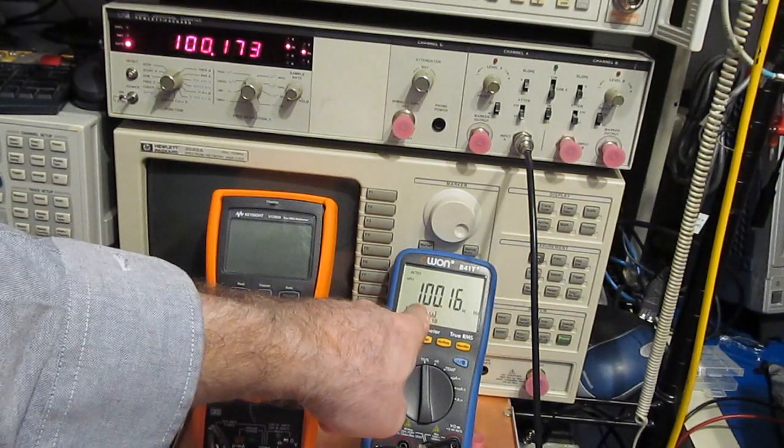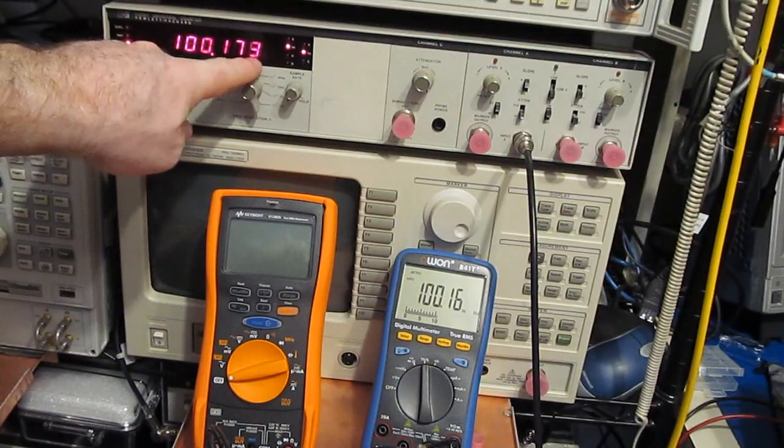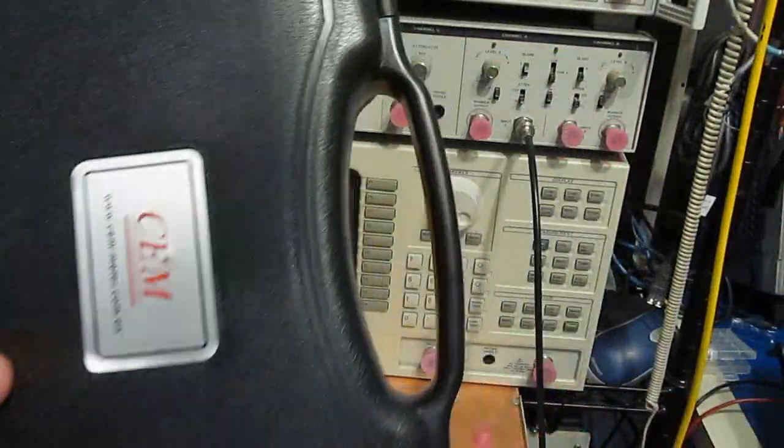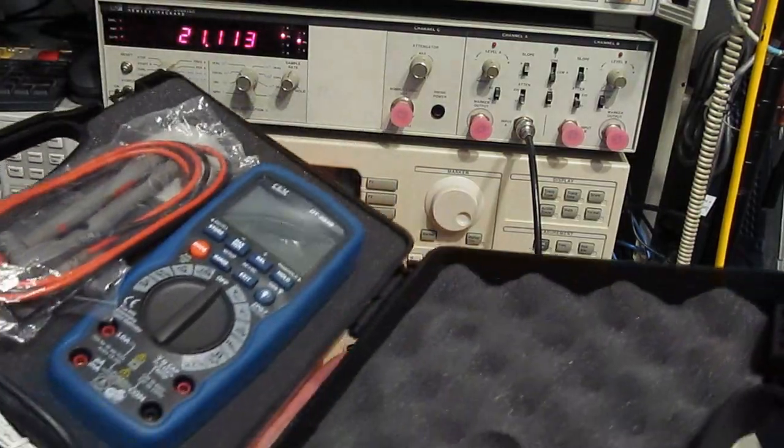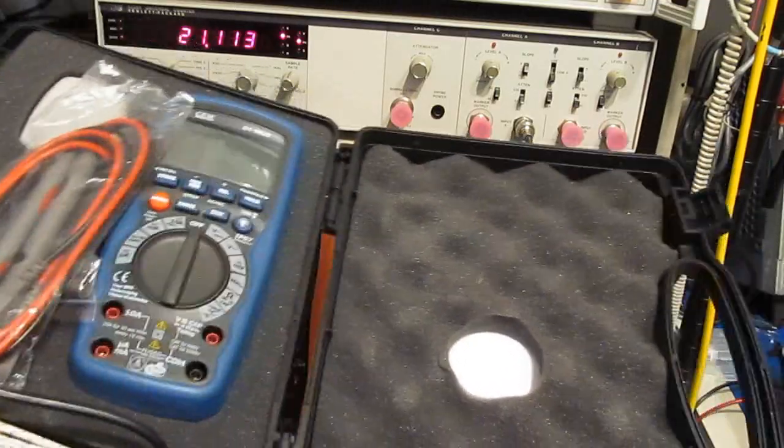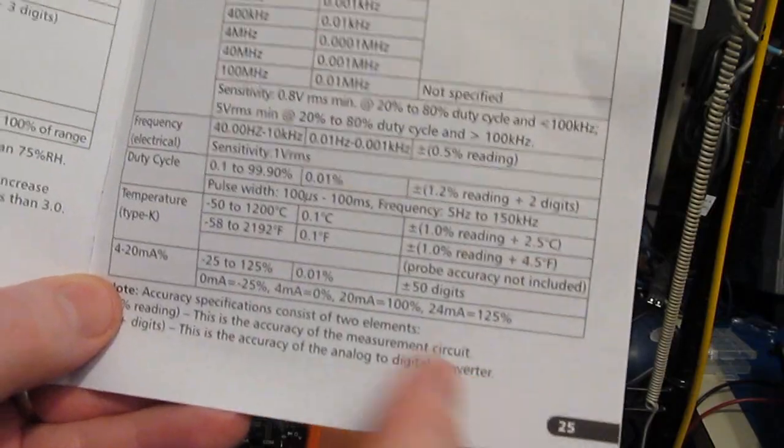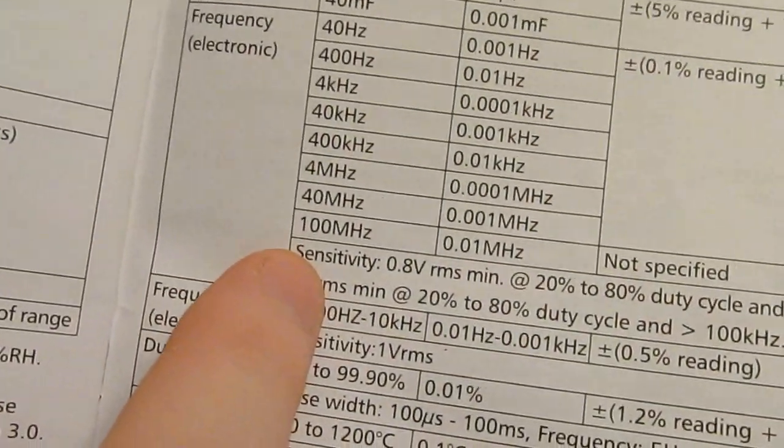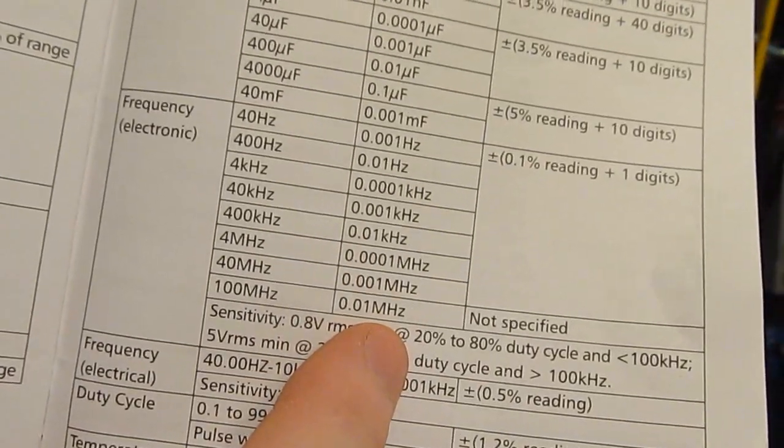And you can see the little Owen is reading 116 versus 179. This is made by SEM. This is the model DT9939. I actually picked this meter up for about a hundred and twenty dollars. Let's just have a look at the manual. This is on page 25.